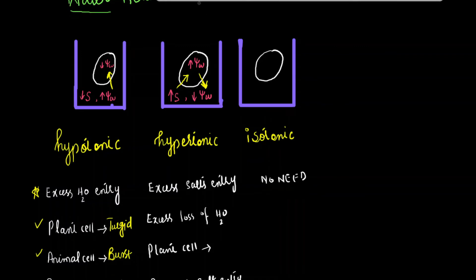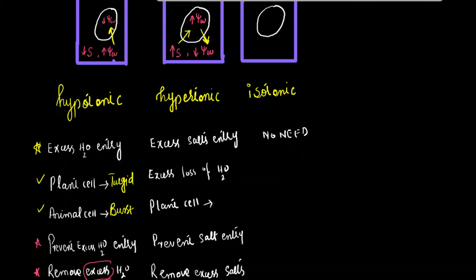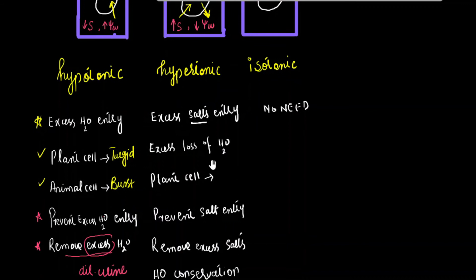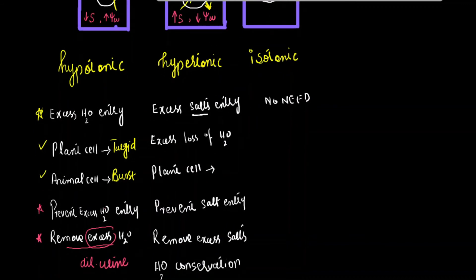In this condition, there will be excess entry of salt into the body and excess loss of water as well. If there is a plant cell in this environment and water moves out from the body, then the condition is called plasmolysis. Plasmolysis is a shrinkage of the protoplast due to exosmosis of water.